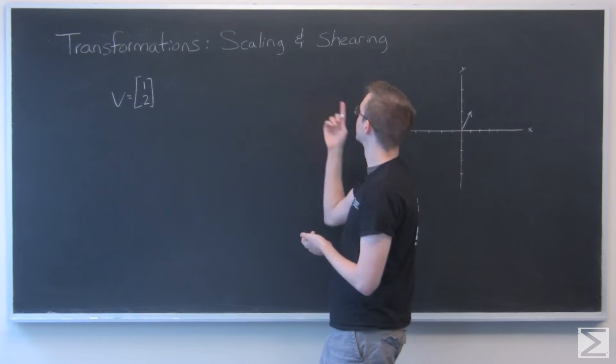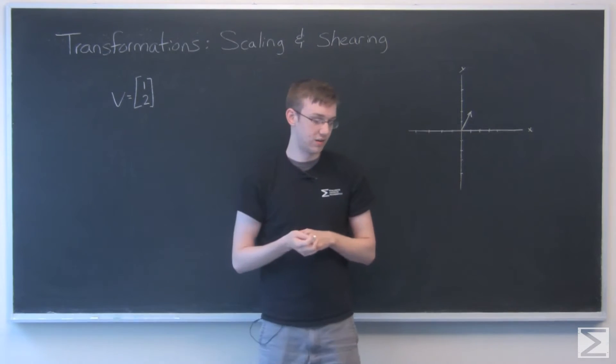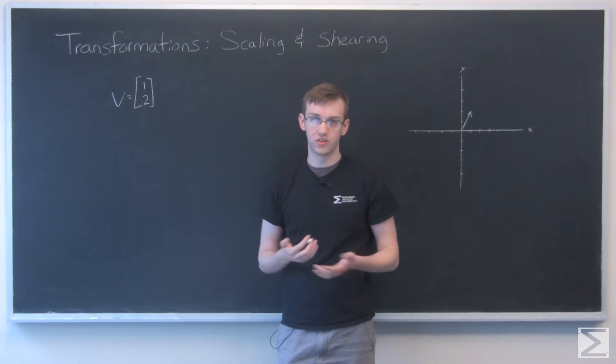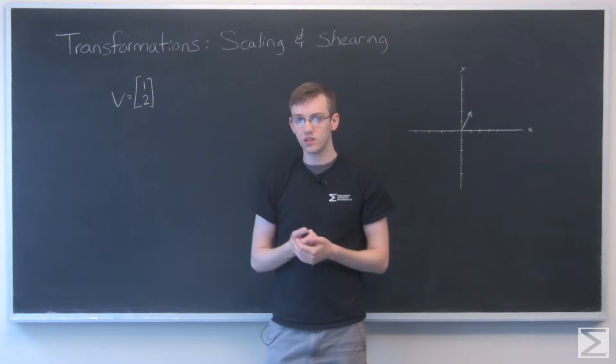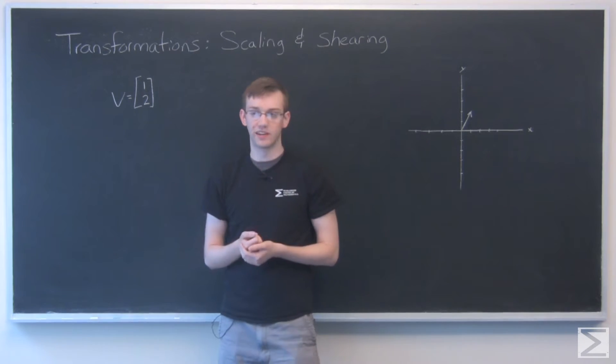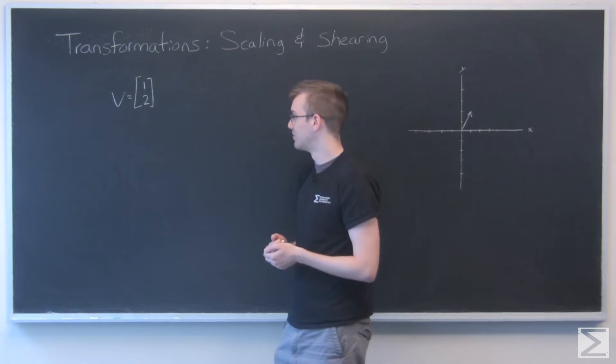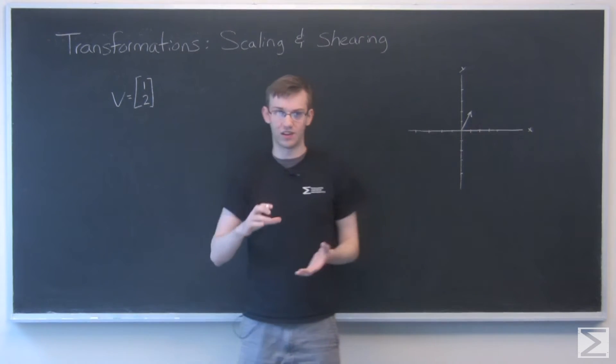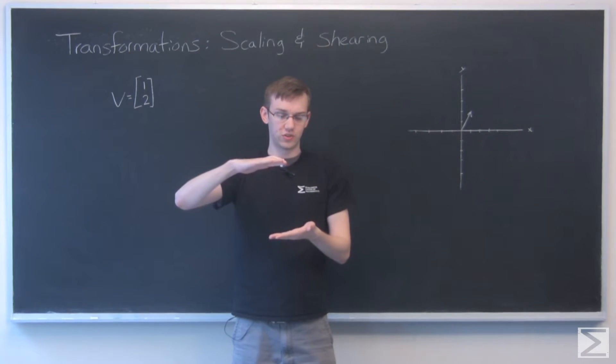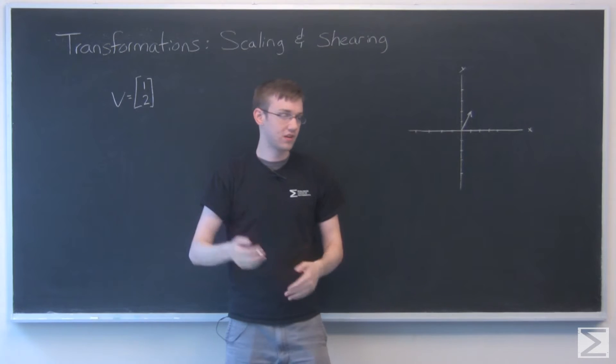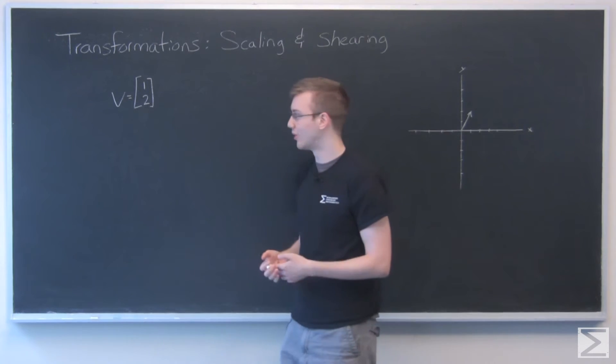The two we're going to look at today are scaling and shearing. Other examples would be a rotation or a reflection. So if you've ever been on Photoshop or something like that, or MS Paint, depending on how ghetto you're feeling, you've noticed that you can take a picture, you can make it bigger, you can turn it, and shearing, which is kind of shifting it to the side while keeping the height the same. So we can do that with math, actually. It's pretty cool.